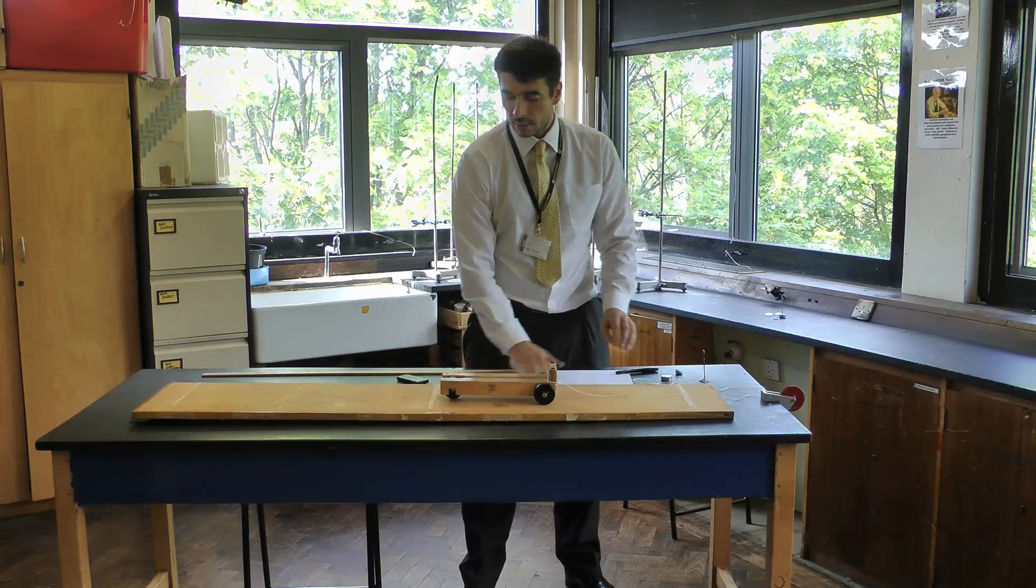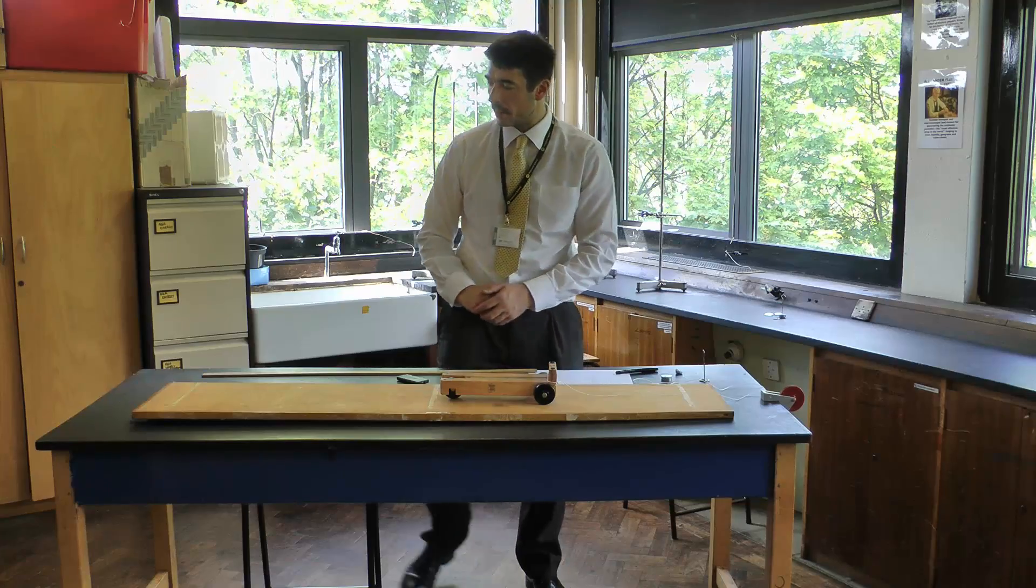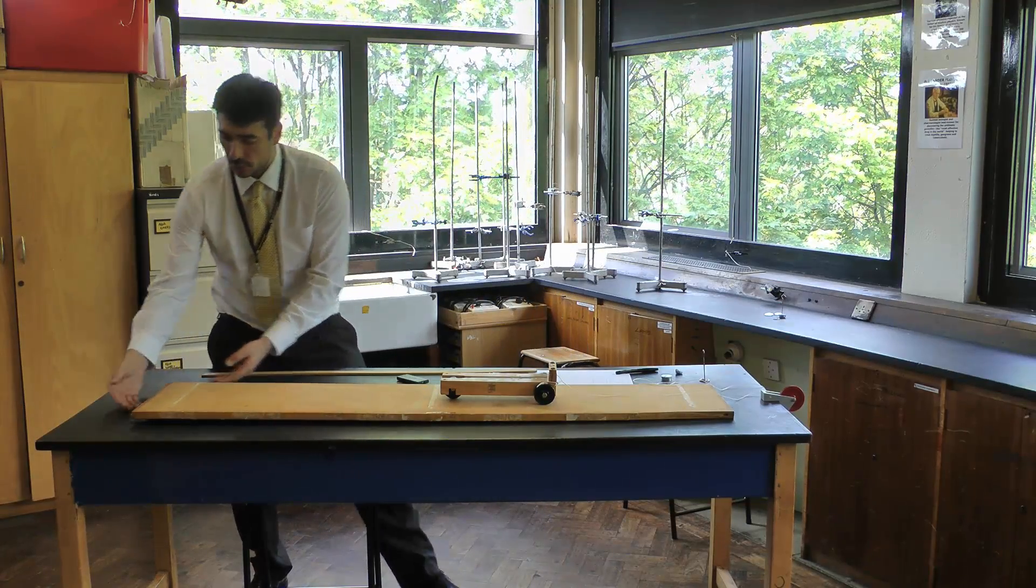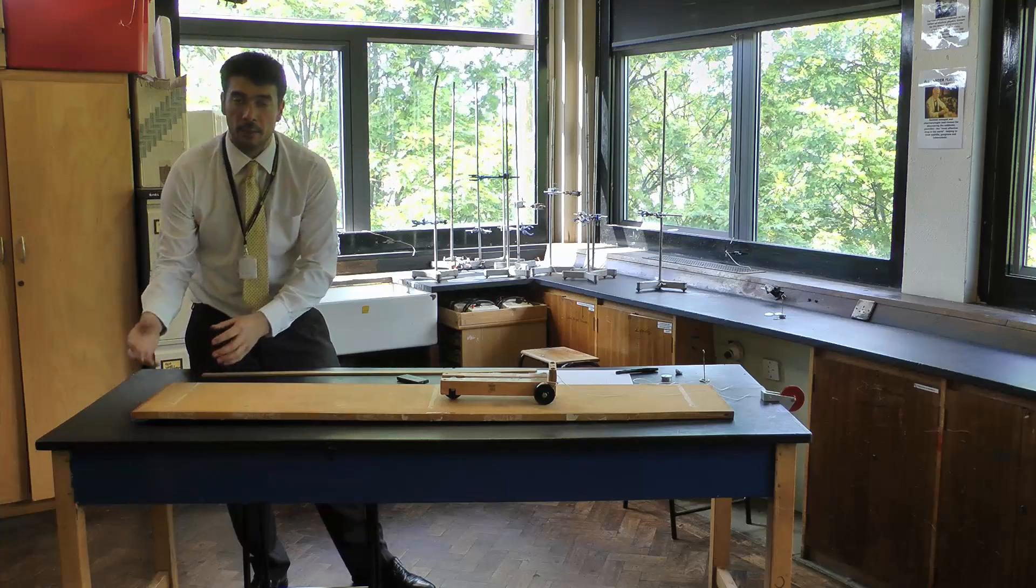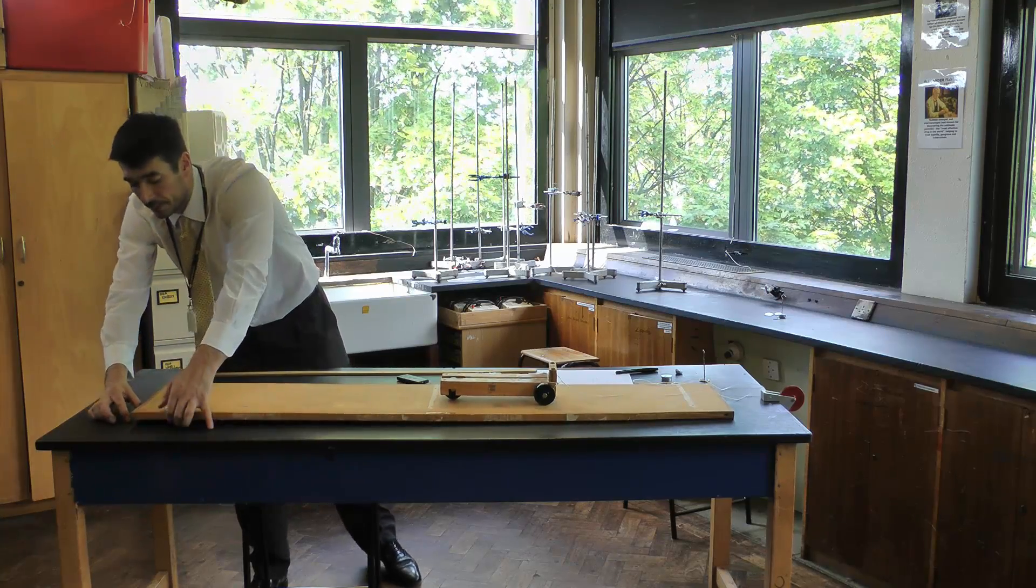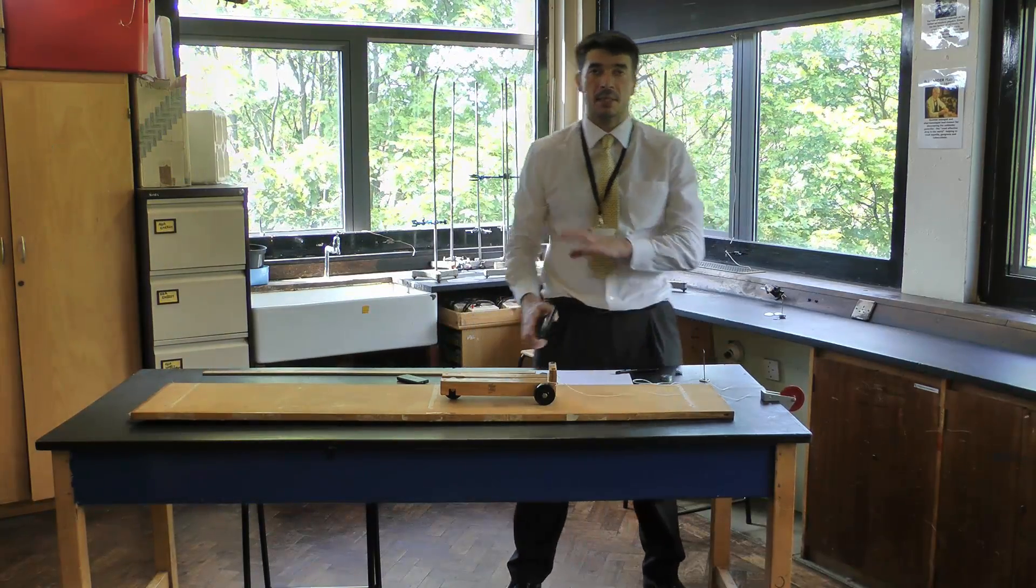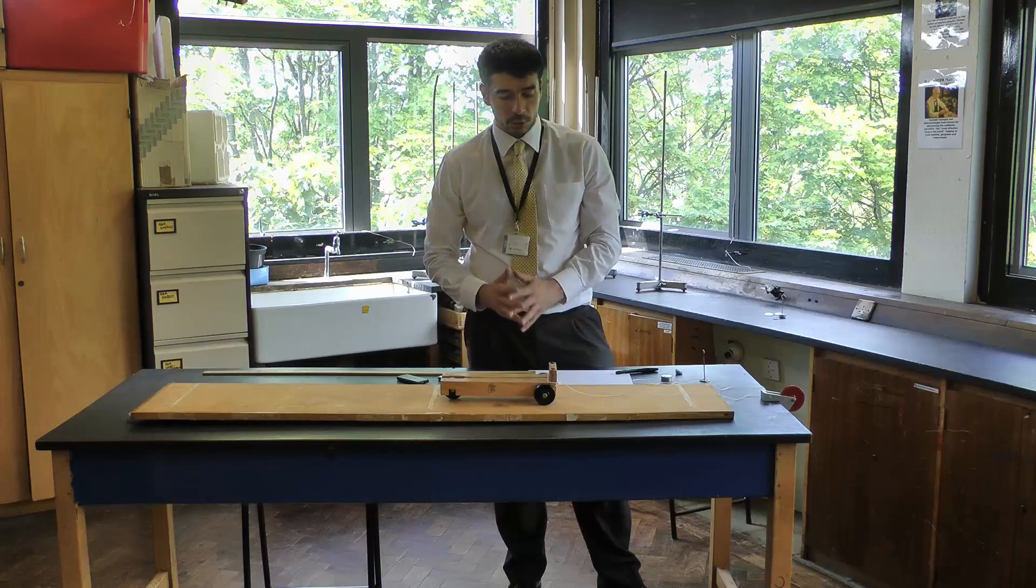You need a smooth inclined plane to roll the trolley down. You need to have something to incline the plane with, so some wedges or 100 gram weights here. So the equipment you need, including a timer. Now you've got all the equipment you need, what you do with it.